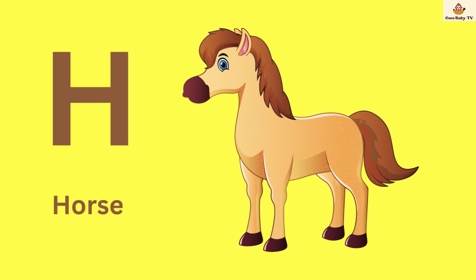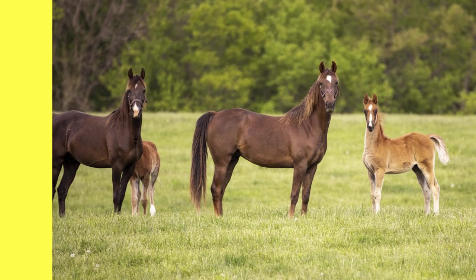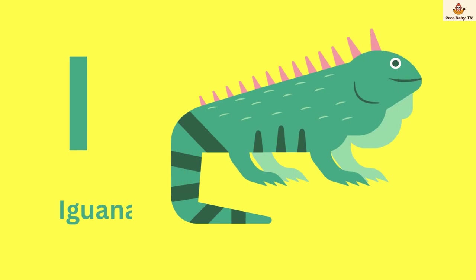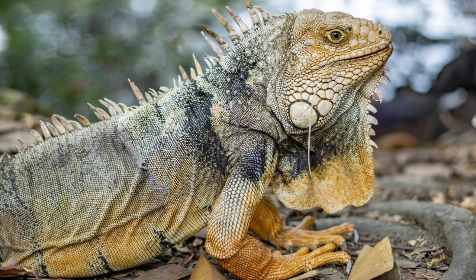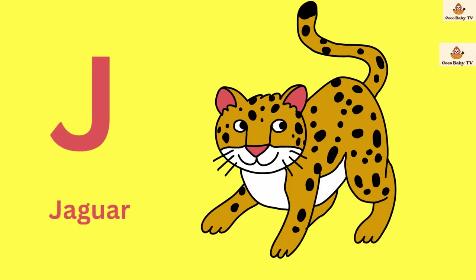H. H is for hearts. I. I is for iguana. J. J is for jaguar.